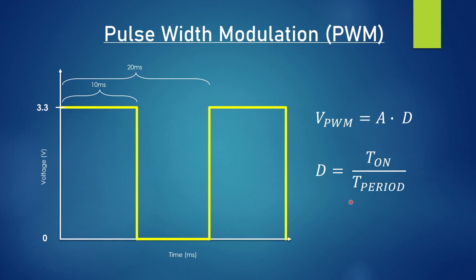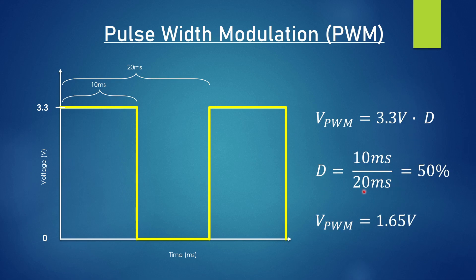So to communicate a voltage other than 3.3 or zero, the equation is amplitude times duty cycle, where duty cycle is time on over the time of the period. In this example, we have 3.3 volts times a duty cycle of 50%, which gets us a 1.65 volt signal communicated to whatever system is interpreting this pulse width modulation.